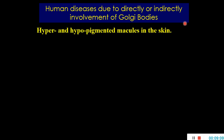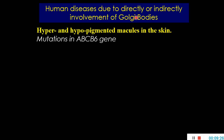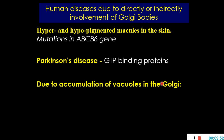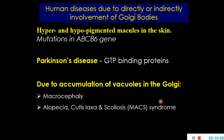The Golgi apparatus can also be involved in the production of hyper- and hypopigmented macules on the skin due to mutations in the ABCB6 gene. The protein product of this gene resides in the Golgi bodies, and when ABCB6 fails to produce the appropriate protein, the Golgi bodies malfunction, resulting in skin pigmentation abnormalities. Parkinson's disease is also indirectly related to Golgi dysfunction via GTP-binding proteins. Accumulation of too many vacuoles in the Golgi bodies causes them to swell, resulting in MACS syndrome.